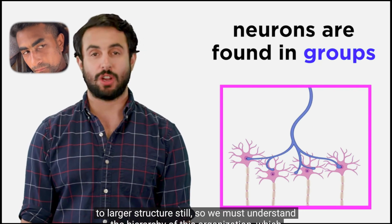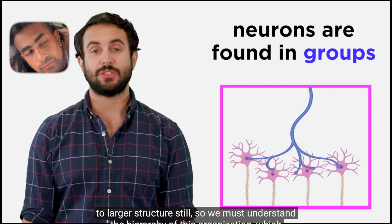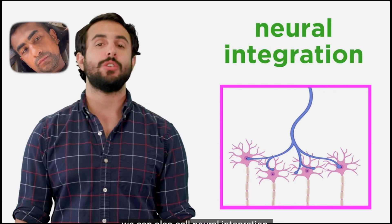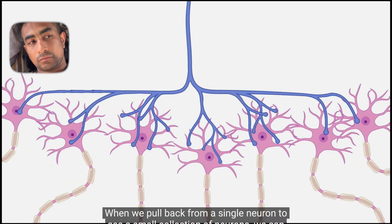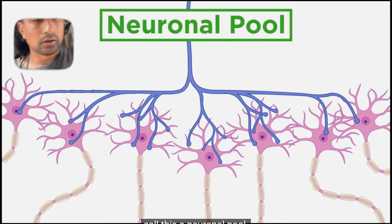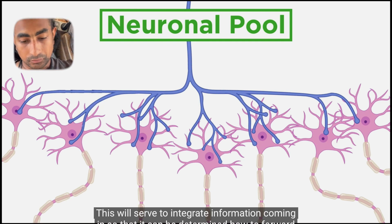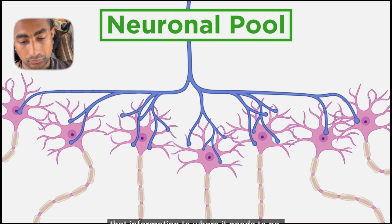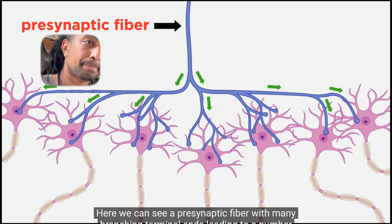This is important to understand because neurons are found in groups, and these groups contribute to larger structures. We must understand the hierarchy of this organization, which we can also call neural integration. When we pull back from a single neuron to see a small collection of neurons, we can call this a neuronal pool, which integrates incoming information to determine how to forward it.